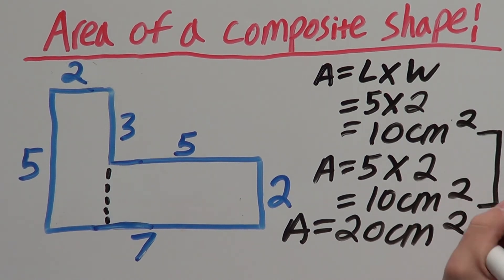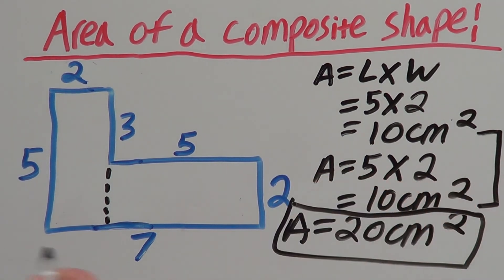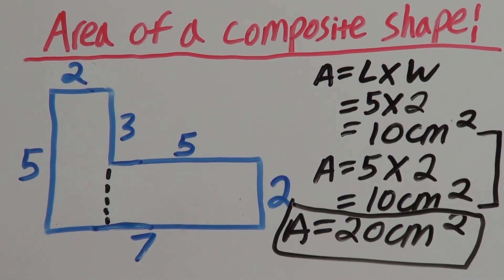Centimeters squared. And that is how you find the area of a composite shape.